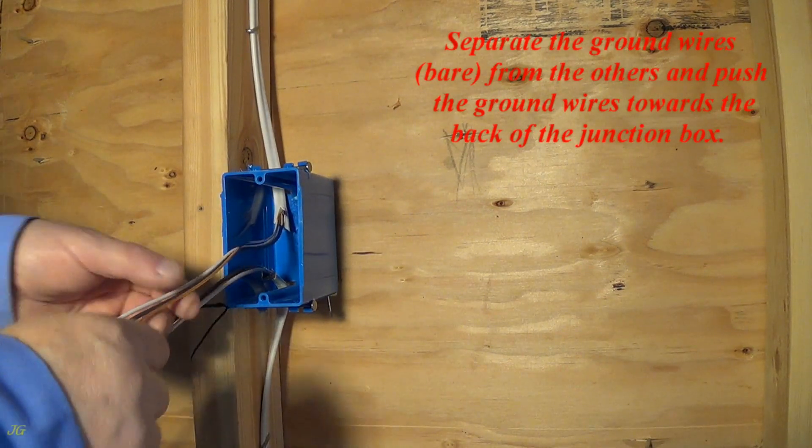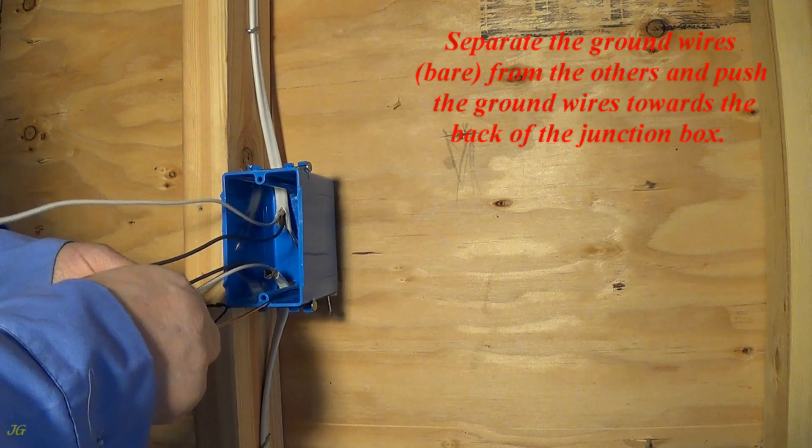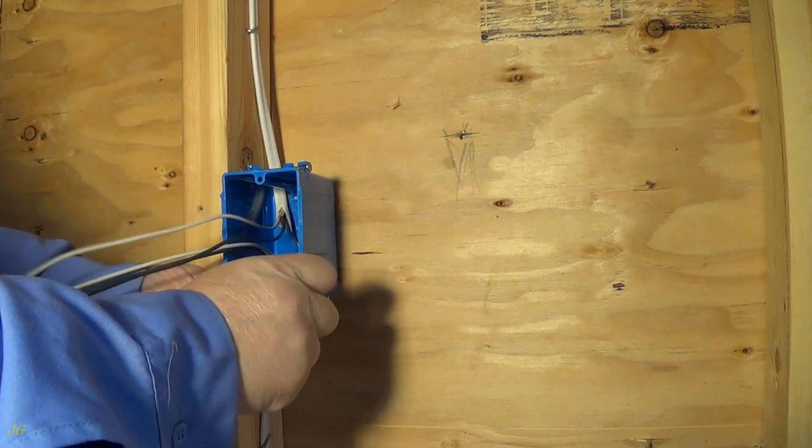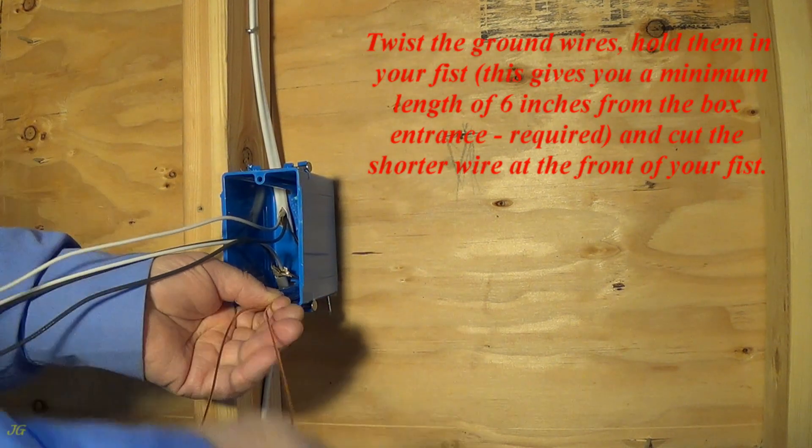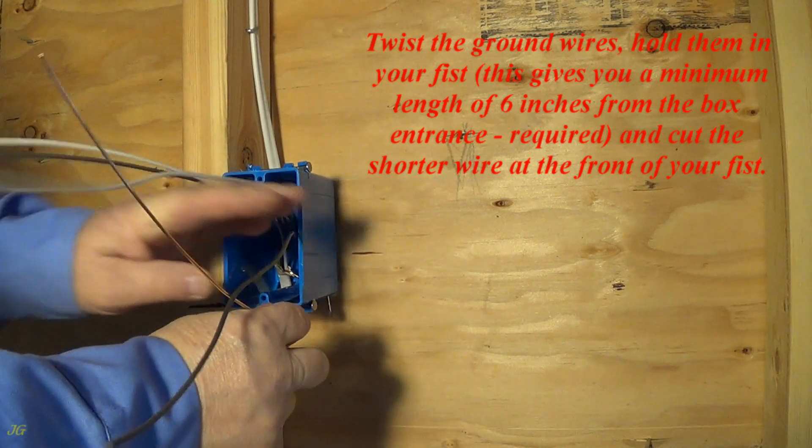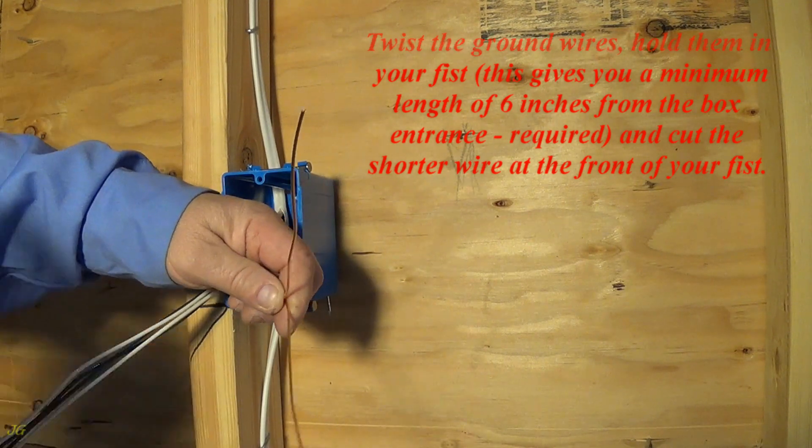Separate the ground wires, bare, from the others and push the ground wires towards the back of the junction box. Twist the ground wires, hold them in your fist. This gives you a minimum length of 6 inches from the box entrance, required, and cut the shorter wire at the front of your fist.